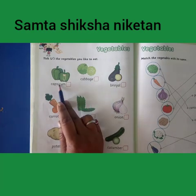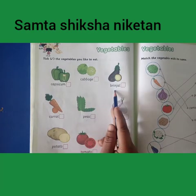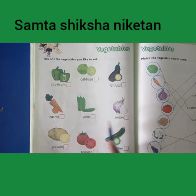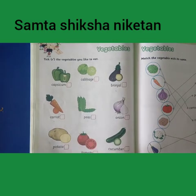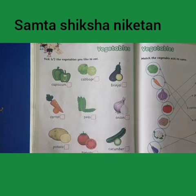What is this? This is capsicum. Cabbage, brinjal, carrot, peas, onion, potato, tomato, cucumber.